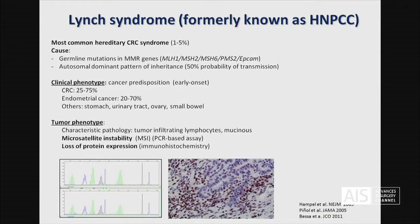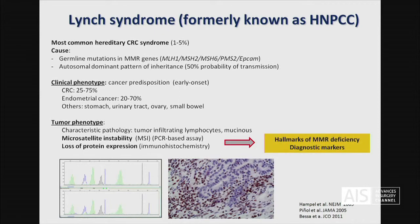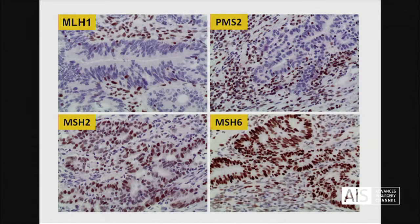What is most characteristic and important for diagnosis is that tumors in these patients show two key markers. One is microsatellite instability, which is a PCR-based assay, and the other is immunohistochemistry with loss of expression of the mismatch repair proteins. Today, immunohistochemistry is the basis of the diagnosis of Lynch syndrome.